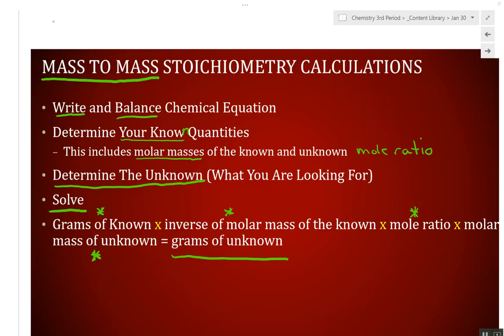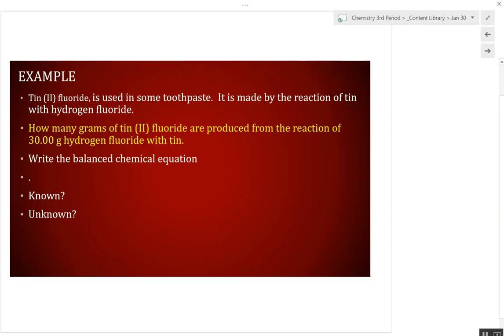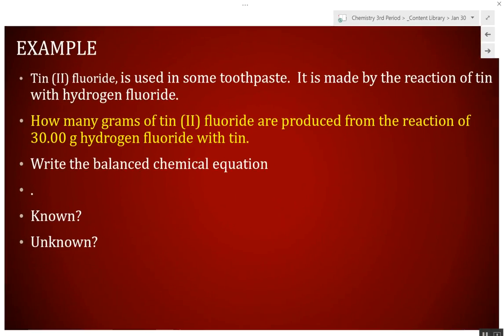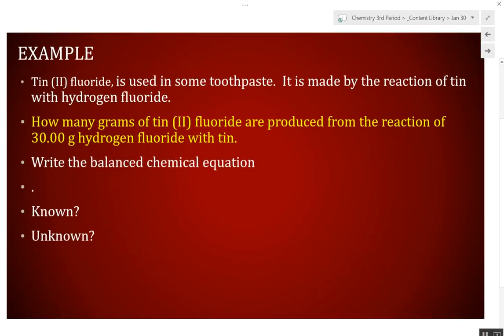This is the example that we started the other day but didn't get done with it. Now, here's the issue, guys. And this is where everybody has issues. It says, tin (II) fluoride is used in some toothpaste. It's made by the reaction of tin and hydrogen fluoride. How many grams of tin (II) fluoride are produced, so this is the product, from the reaction of 30 grams of hydrogen fluoride with tin.